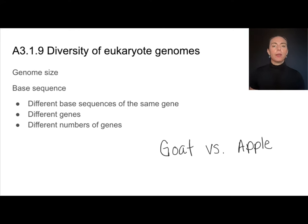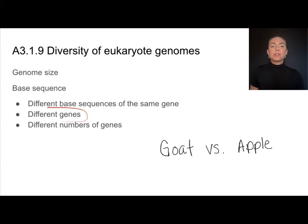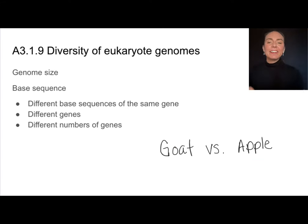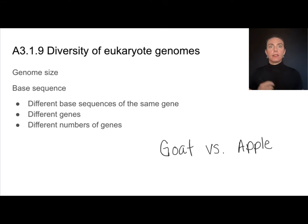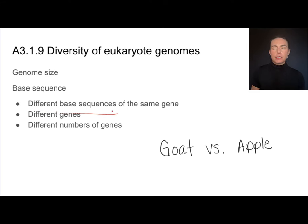So how might that work? They may have a different number of genes — different organisms have different requirements, so they may need different numbers of genes. They may have different types of genes; since a goat has legs, it's going to have different genes than an apple. And then even if they share the same gene, it might have a different base sequence. For example, a goat and an apple both have a gene that helps them to synthesize RNA, but that gene may have a slightly different pattern of A's, T's, G's, and C's.